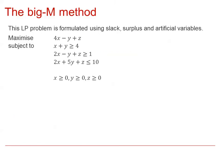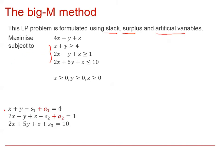We're going to look at the same linear programming problem formulated in previous videos, where we used slack, surplus, and artificial variables. The three constraints become three equations: the top two use surplus and artificial variables, and the third uses slack variables. We want to maximise the function 4x minus y plus z.